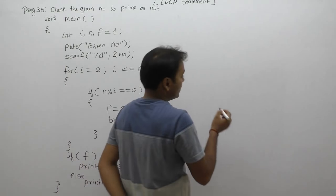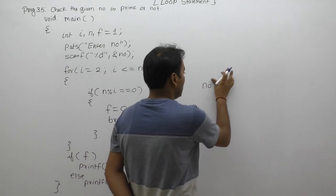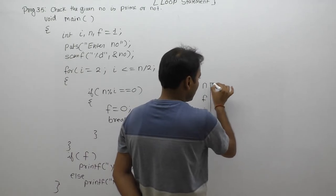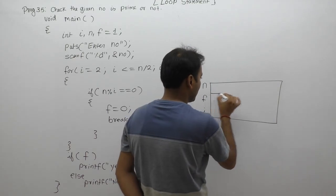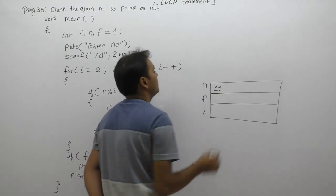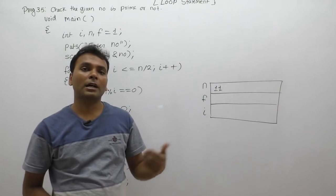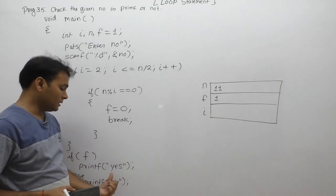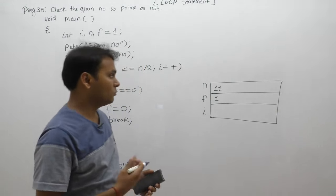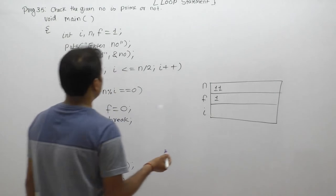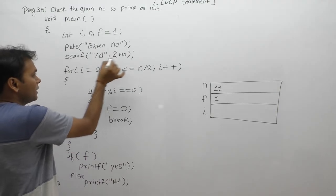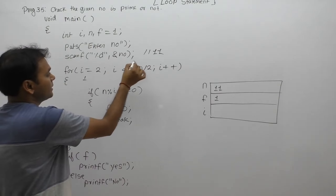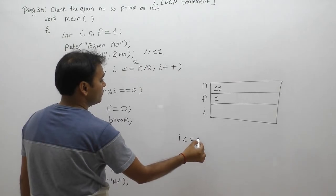Suppose we have three variables: n, f, and i. First time suppose we are entering eleven. Eleven is a prime number. Flag initial value is one. Expected output: yes. We test first - the loop starts. Number value entered is currently eleven. Next, i equals two. We test the condition.